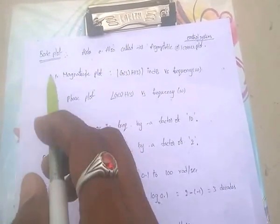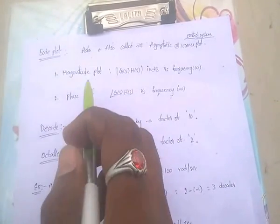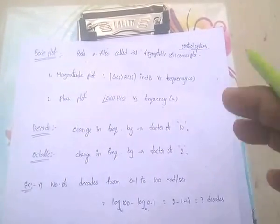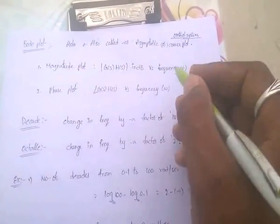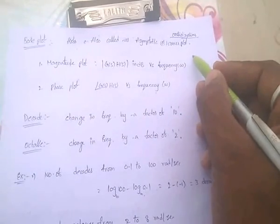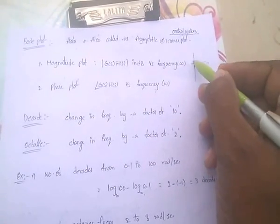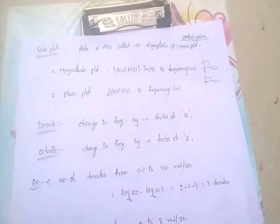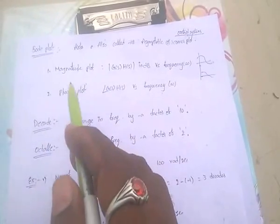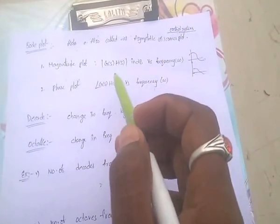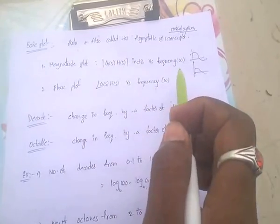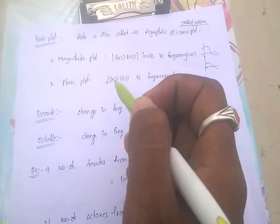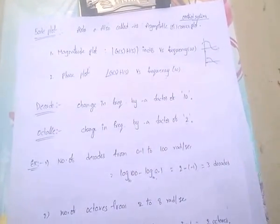In this Bode plot, mainly two plots are there. First one is magnitude plot, second one is phase plot. The magnitude plot is a plot between magnitude vs frequency, and the phase plot is the angle of G(s)H(s) between frequency.